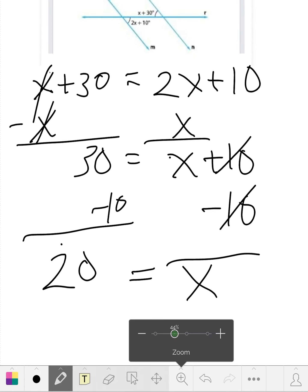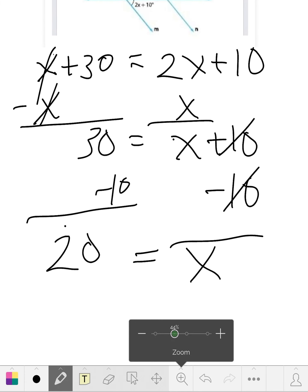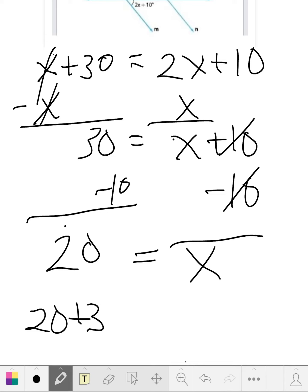We need to plug that back into the equation. We have x plus 30, so that's 20 plus 30, which equals 50 degrees for one angle. The other angle is 2x, so we have 2 times 20 plus 10, which also equals 50. Our solution is 50 degrees for each angle.